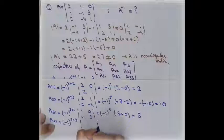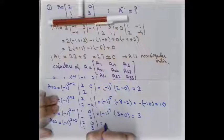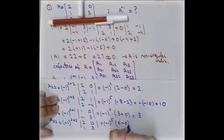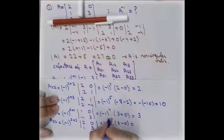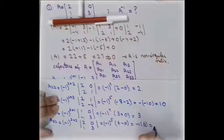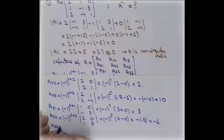For A32, with i+j = 3+2 = 5, the remaining determinant uses elements 2, 0, 1, 3. Computing: 6 - 0 = 6. Since the power 5 is odd, (-1)^5 = -1, so A32 = -1 × 6 = -6.